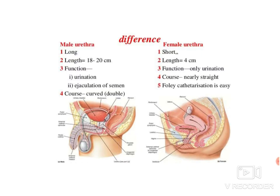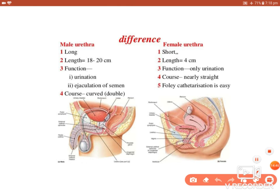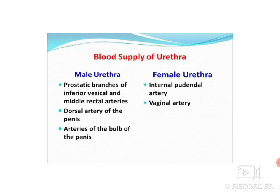The differences between male and female urethra: length is 18 to 20 centimeters in males versus approximately 4 centimeters in females. In terms of function, the male urethra serves both urination and the passage of semen — during ejaculation, the internal urethral orifice closes to prevent retrograde flow. The female urethra serves only urination.